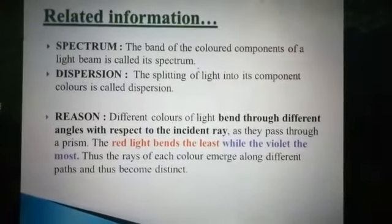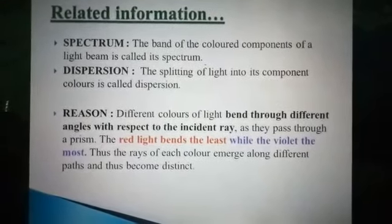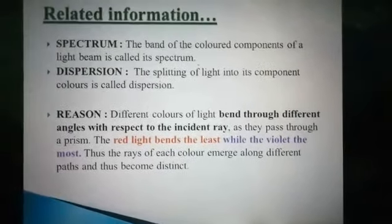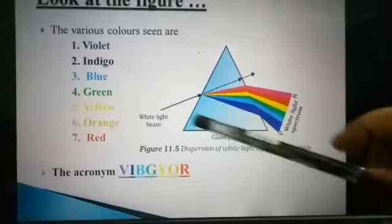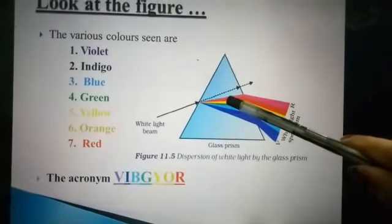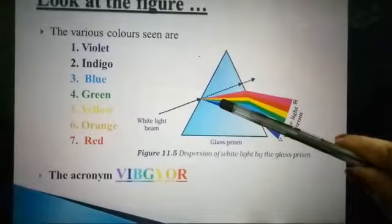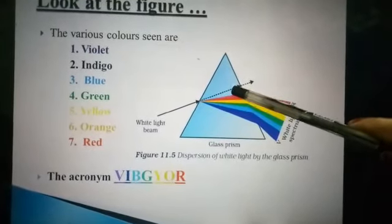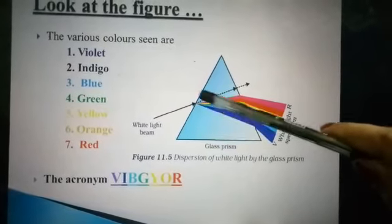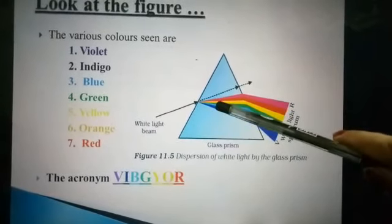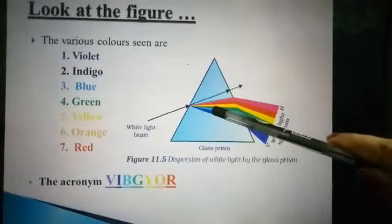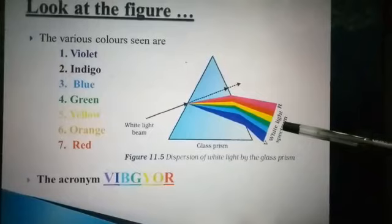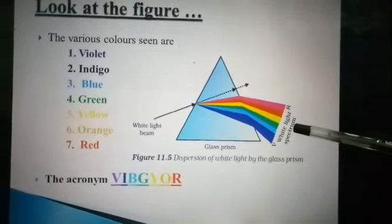Different colors of light bend through different angles with respect to the incident ray. The incident ray and the refracted ray — the angle of bending with respect to the incident ray is different, meaning the angle of refraction is different. If the angle of refraction is different, naturally their emergent rays will also be different.